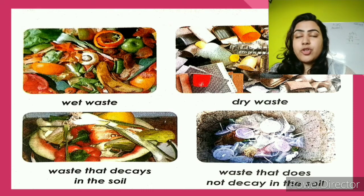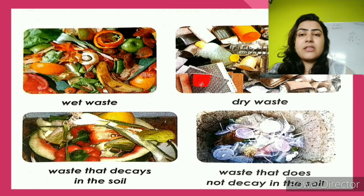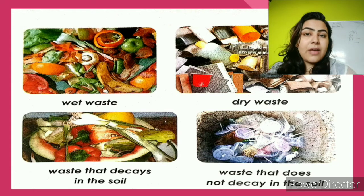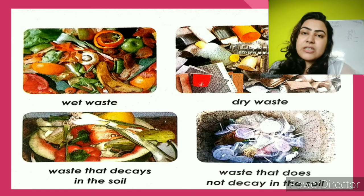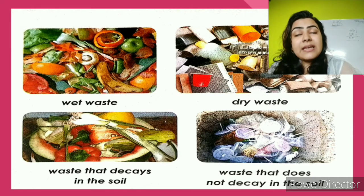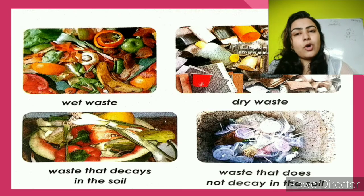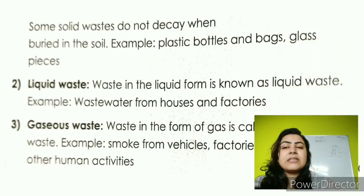We have all heard the news that we should stop using plastic. This is because plastic does not decay in the soil — it remains as it is. When animals eat it, they die because plastic contains poisonous chemicals. These plastic particles go inside the animals along with the soil, and they die because of those poisonous chemicals. Vegetable peels and paper, being plant products, do not harm our bodies or those of other animals. Some solid waste, like plastic bottles, bags, and glass pieces, do not decay when buried in the soil.